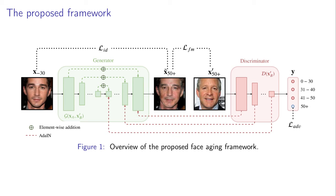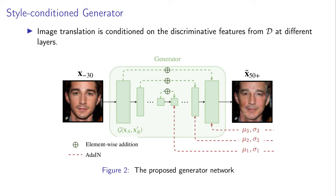Our generator is an auto-encoder-like network designed to translate an input image to a target age class. We show an input image of age under 30 being translated to the age class over 50. To condition the translation, we use the activations of the discriminator to modulate the style content in the generator at every layer using adaptive instance normalization. The age style is extracted by feeding an image of the target age class to the discriminator, and the resulting first- and second-order statistics of the activations are represented by the mu's and sigmas, as shown in Figure 2.